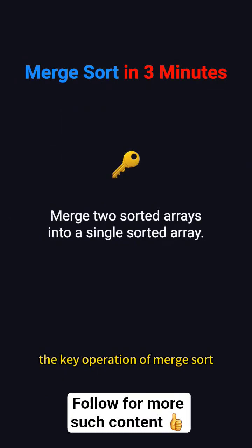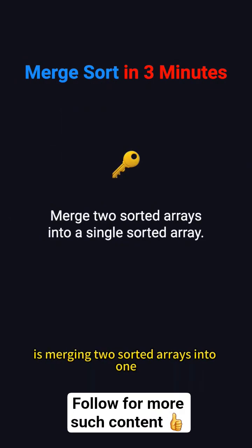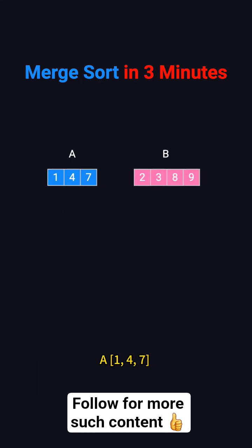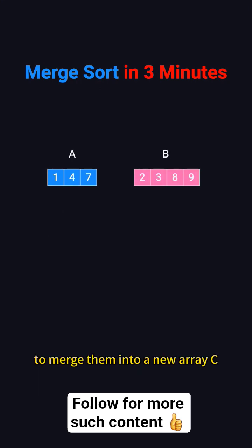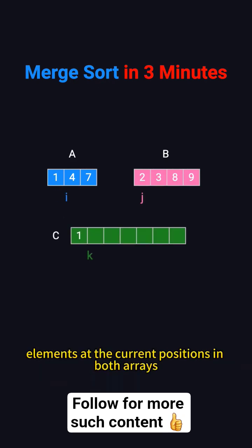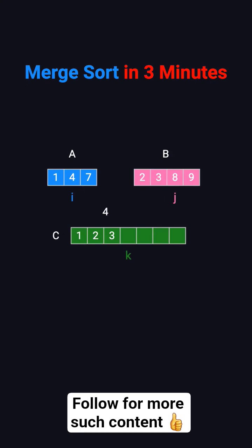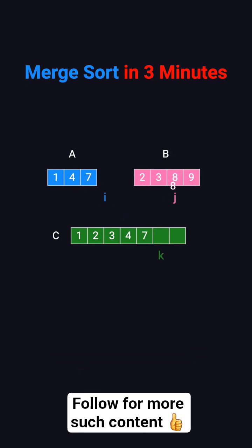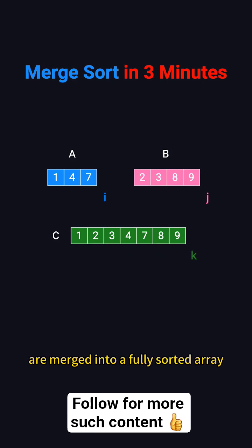The key operation of Merge Sort is merging two sorted arrays into one. Imagine we have two arrays, A: 1, 4, 7 and B: 2, 3, 8, 9. To merge them into a new array C, we compare the elements at the current positions in both arrays, copy the smaller one into C, and move the corresponding pointers forward. We repeat this process until all elements are merged into a fully sorted array.